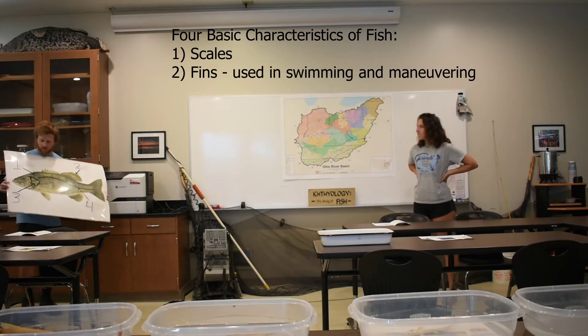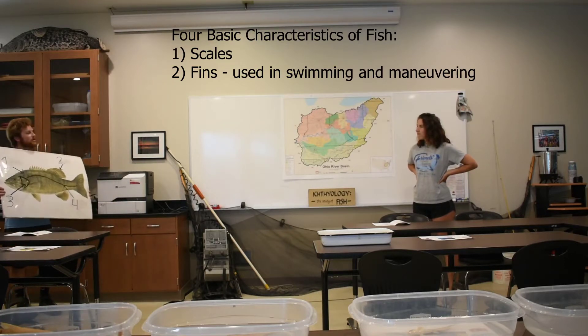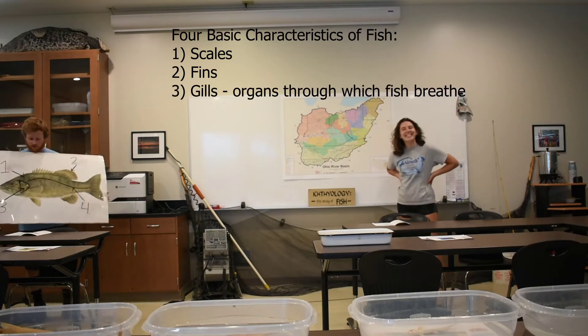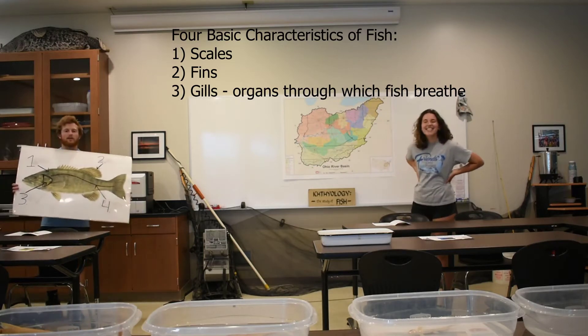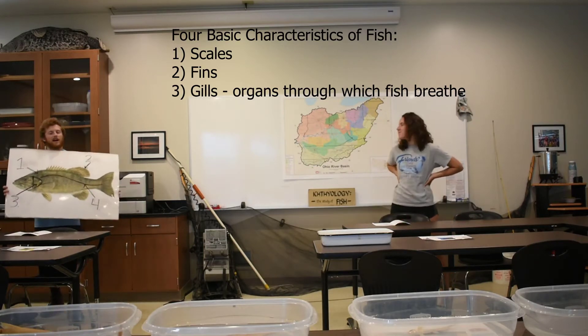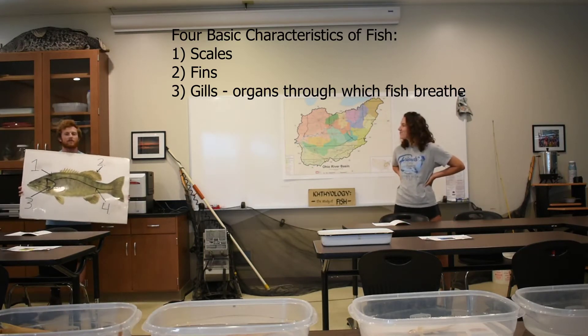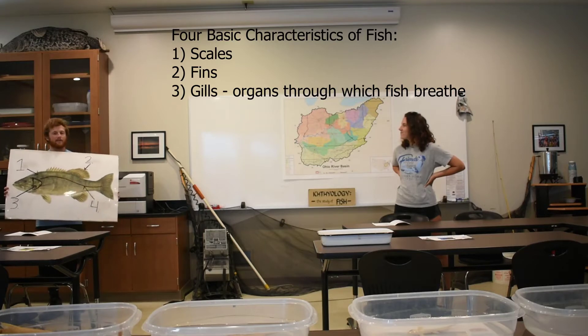And number three — what do fish use to breathe? Their gills. Exactly, they use gills. So fish are able to take oxygen out of the water, very similar to how our lungs are able to take oxygen out of the air.